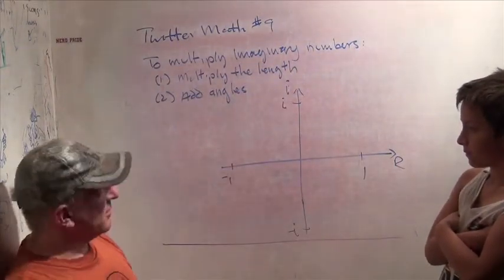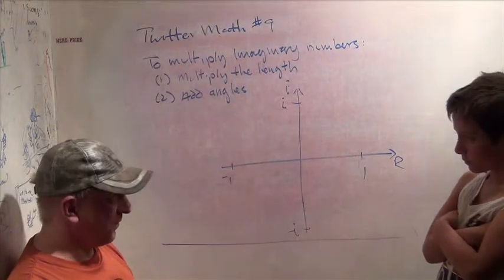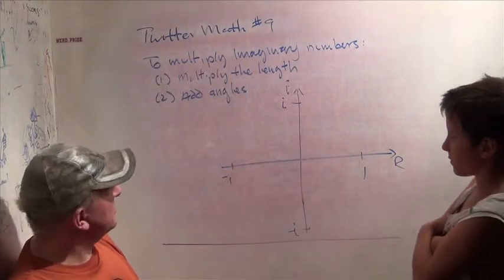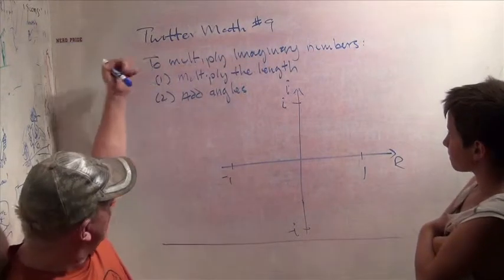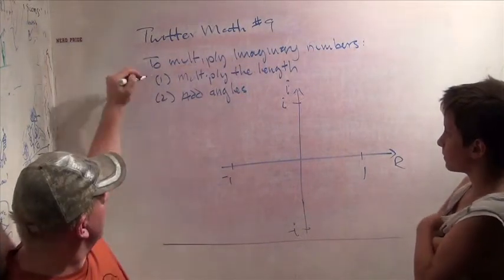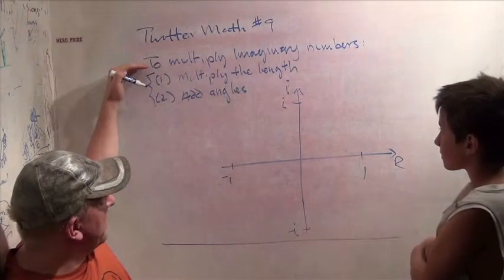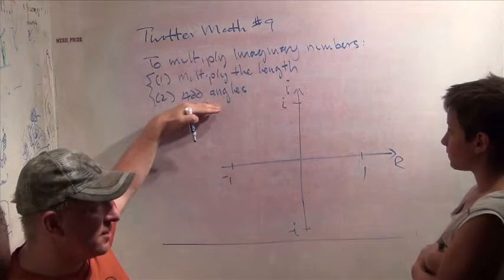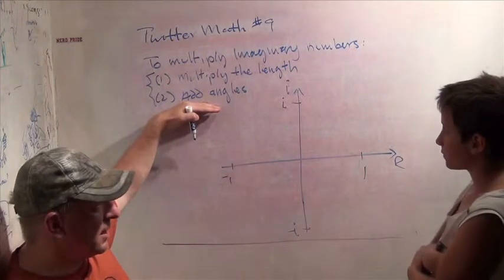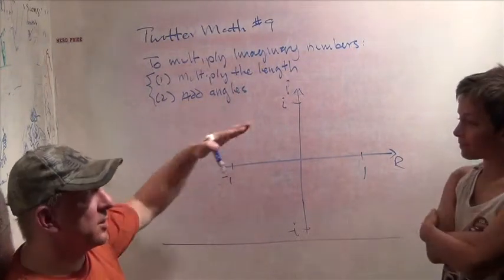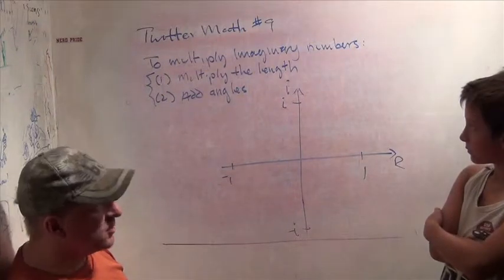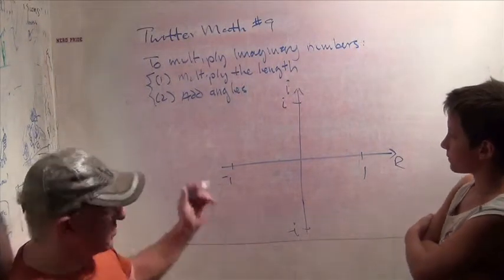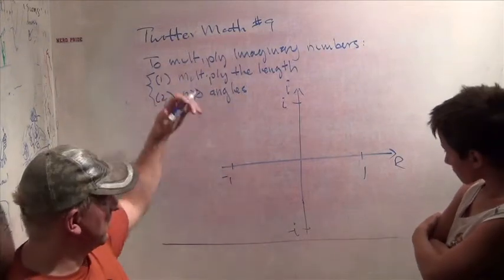I forgot to tell you yesterday, this is called the complex plane because it has complex numbers, which are also called imaginary numbers. And we saw yesterday this really cool rule - to multiply imaginary numbers, you multiply the length and then you add the angles. Pretty amazing, right? A relationship between multiplying and adding. Who would have thought?